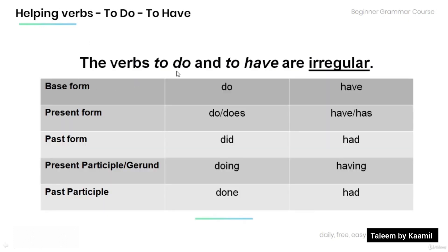Remember, the verbs to do and to have are irregular. The base form of the verb 'do' is do; 'have' is have. The present form is do or does; have or has. The past form is did; had. The present participle or gerund is doing; having. The past participle is done; had.